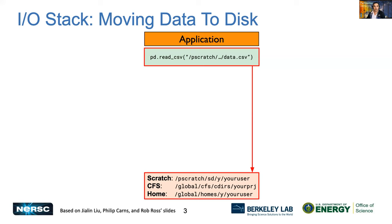On your laptop, the route to go from a path to the actual data on your drive may be short. But on parallel and distributed file systems of several petabytes of capacity, there are more layers in between.